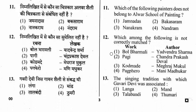Question 12: Which of the following is not correctly matched — work and author? The wrong option is Golbharmali by Yaduvyan Sharma. The rest are correctly matched: Pagi — Chandraprakash Deval; Komdade — Meghraj Mukul; Pagphero — Mani Madhukar.